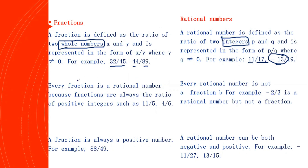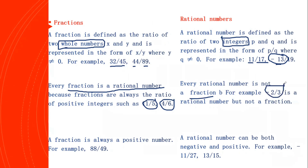This is the first difference. And we can say that every fraction, whatever fraction you take, is a rational number, because integers include whole numbers. So any fraction — 11 by 5, 4 by 6 — they are fractions and they are rational numbers also. But every rational number is not a fraction. Why? Minus 2 by 3 is a rational number, but it's not a fraction. So this is one of the differences between fractions and rational numbers.